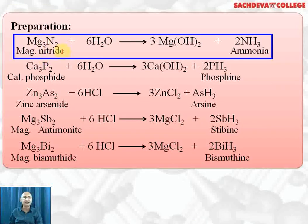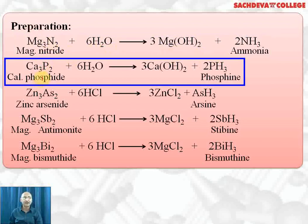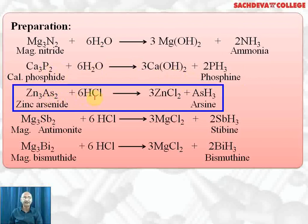How to prepare hydrides? Magnesium nitride reacts with water to give magnesium hydroxide plus ammonia. Calcium phosphide reacts in the same manner — calcium ion reacts with OH⁻ to form calcium hydroxide, and phosphide ion reacts with H⁺ to form phosphine. Zinc arsenide reacts with 6 HCl or water to form zinc chloride and arsine. Arsine is a poisonous gas used in warfare.